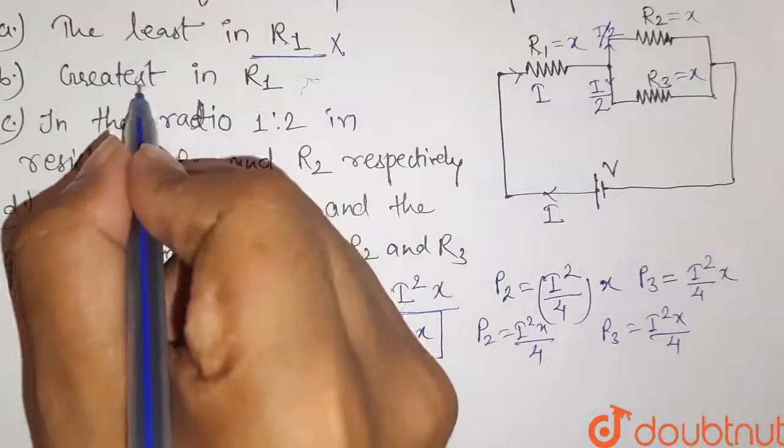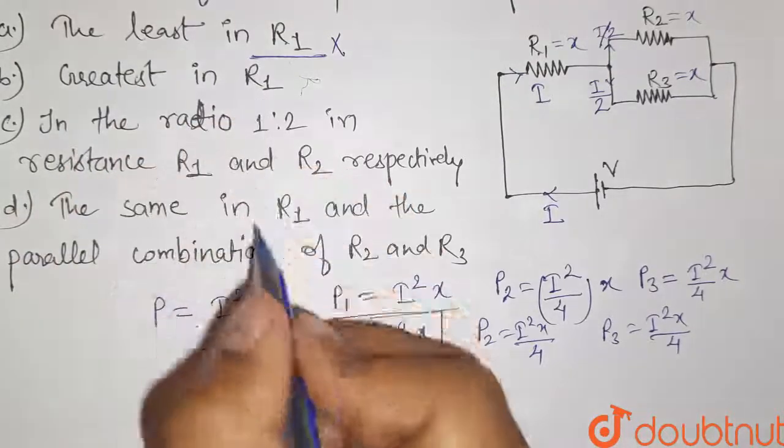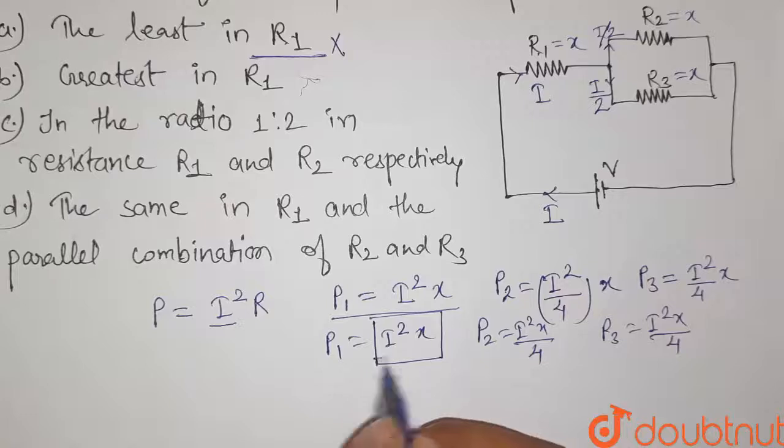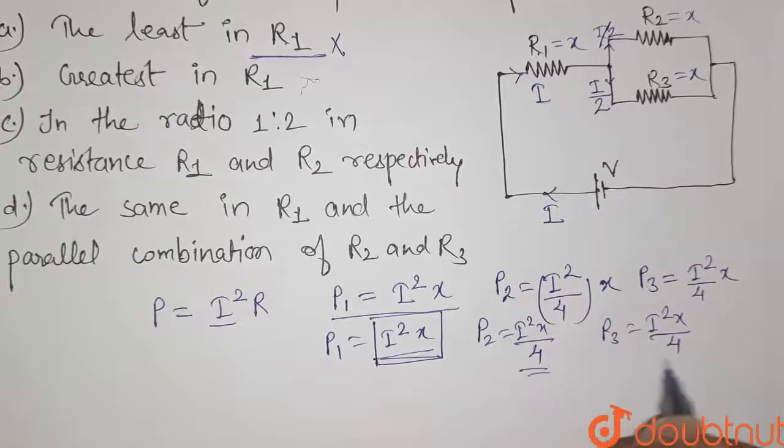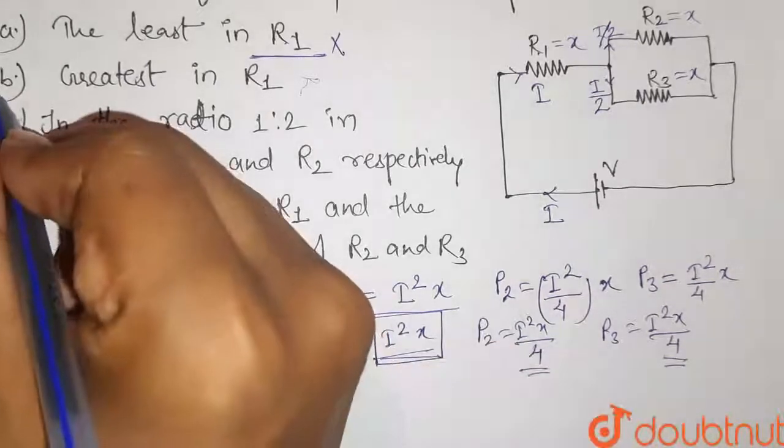The power dissipated is greatest in R1. And it is true because this value is greatest among these three values. So this is the right option here.